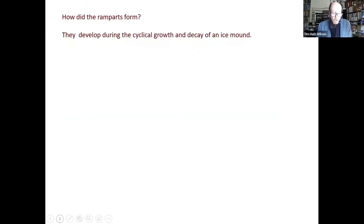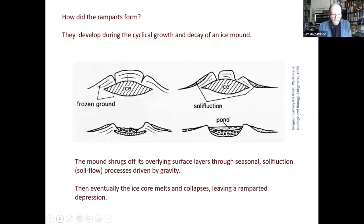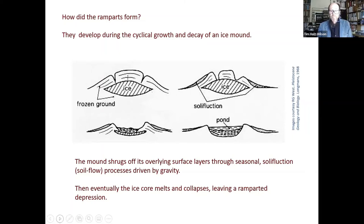Before going on, I'd like to explain how the ramparts formed. They develop during the cyclical growth and decay of the ice mound. As it grows, the mound shrugs off its overlying layers of sediment through seasonal soil effluxion — essentially soil flow in the active layer driven by gravity. The mud slides off the mound, cracks appear, and eventually the ice melts. You then get a ramparted pond developing in the depression that's left.